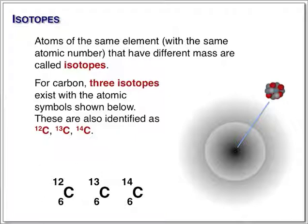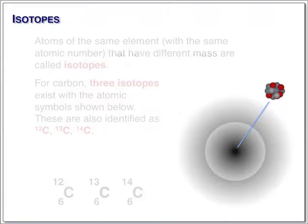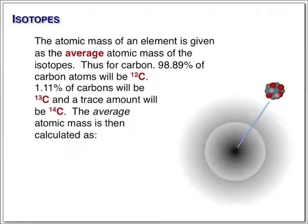Now, in order to do quantitative calculations involving carbon, we need to know exactly how much carbon is going to weigh. We can do that because the ratio of isotopes in the Earth's crust and in the atmosphere is constant.